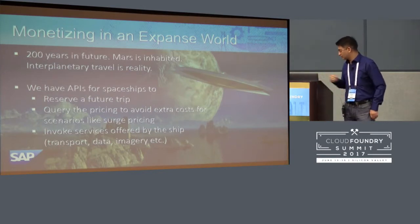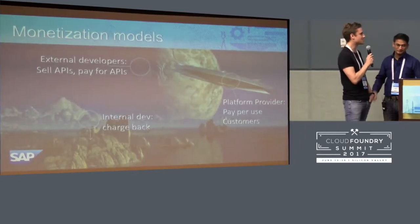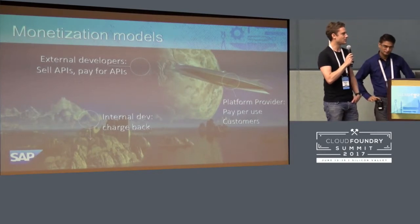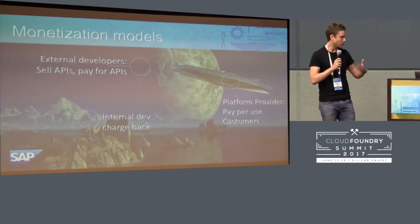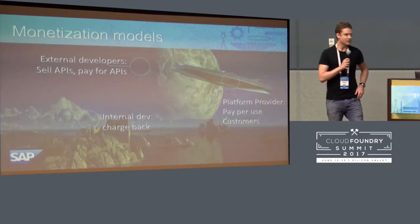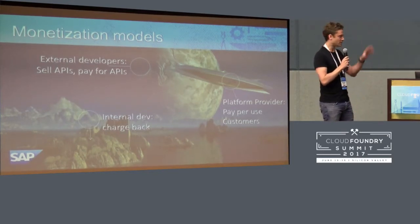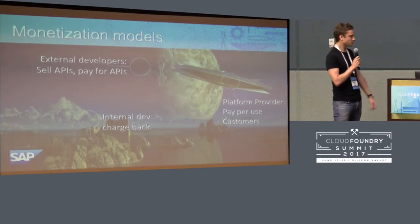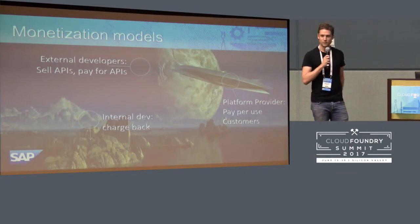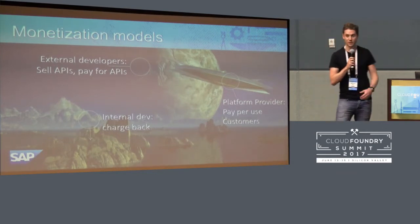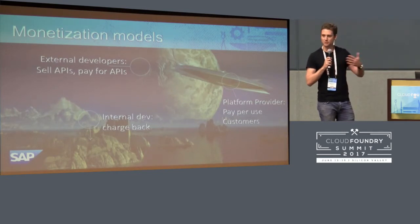Thanks, Pankaj. I love the setup for this. APIs everywhere, everything is a service — and we are 200 years in the future here, but all of us are trying to make this a reality now. In this ecosystem Pankaj just described, there are a number of different actors. We've identified three major groups: platform providers — these are the guys with the big spaceship — who have services and products on their platform and charge end customers.